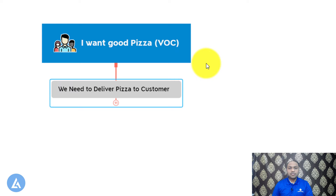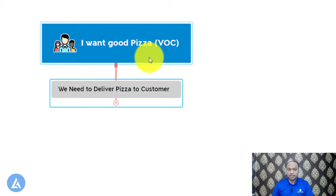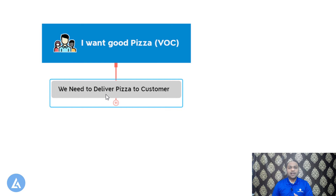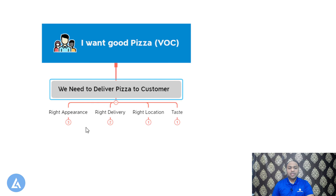In this example, the voice of customer is: 'I want good pizza.' Once we have identified the voice of customer, the next step is to identify the project objectives, which here would be: 'deliver pizza to customer.' Then we identify the different drivers for that objective, which can be right appearance of the pizza, on-time delivery of the pizza, delivery at the right location, and delivery of the pizza of the correct taste. These categories are called as drivers for the project objectives.